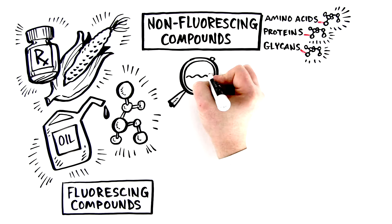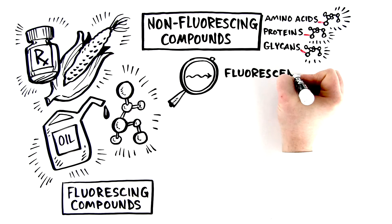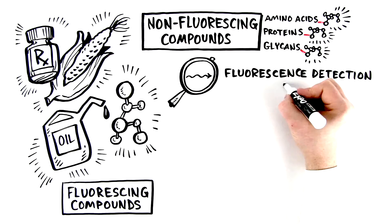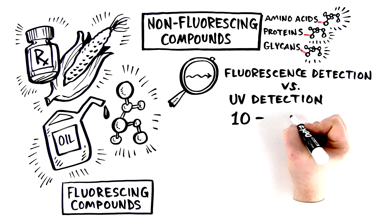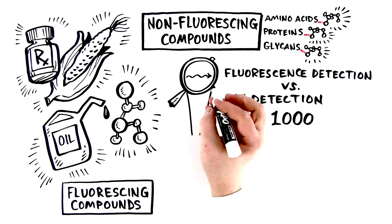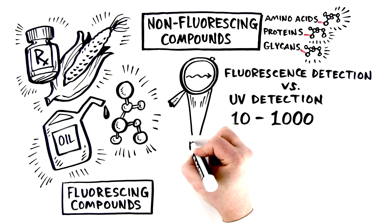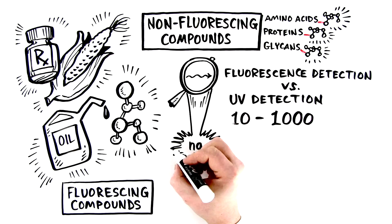This way, these compounds become visible for a fluorescence detector. By detecting the emitted light, fluorescence detection is much more sensitive than UV detection by a factor of 10 to 1000. This allows detection of trace amounts of compounds down to the nanogram level.